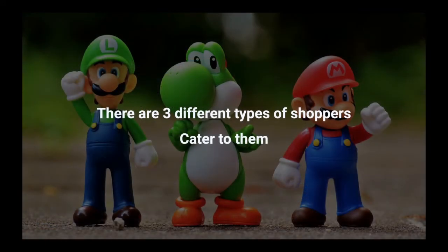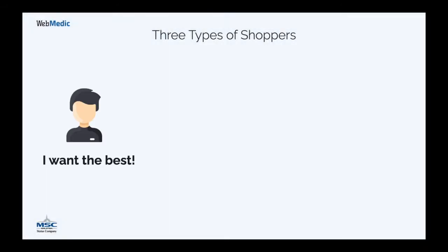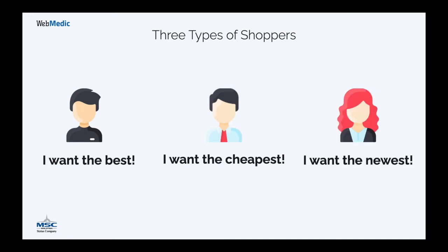There are actually three different types of shoppers online, and in order to sell to them, you must cater to their needs. First, there are people who want the best stuff — they don't care about price, just highest quality. Then there are people who want the cheapest stuff — they want it on promotion and at an affordable price. Finally, there are people who want the newest stuff — if it's a new arrival, they want it.